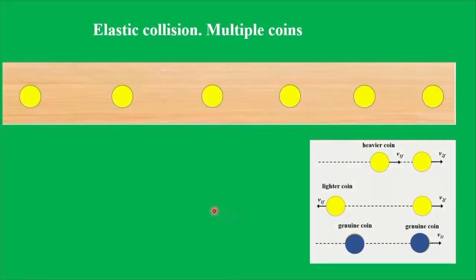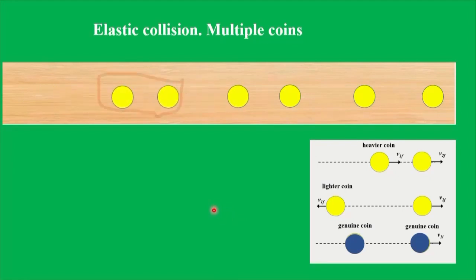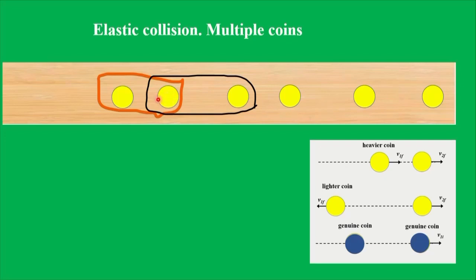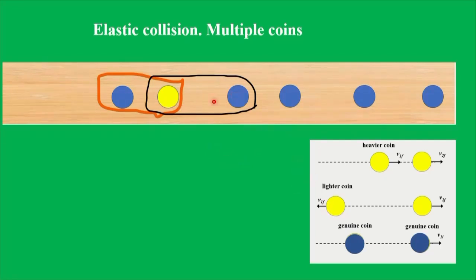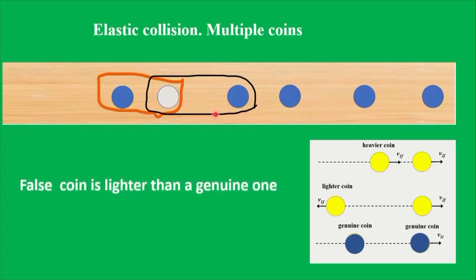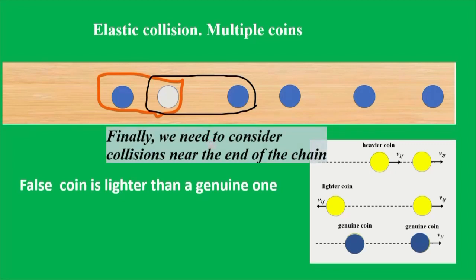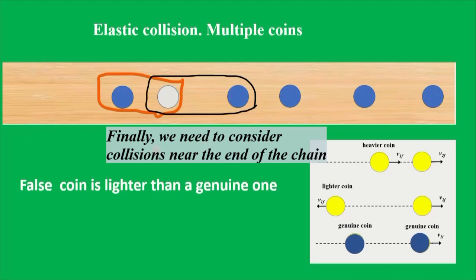The next case is similar to the previous. We saw that these two coins moved in the same direction after the collision, and these two in opposite directions. For this reason, the false coin is this one, and all others are genuine coins. The false coin bounced from the genuine one, and for this reason it is lighter than a genuine one. Finally, we considered the false coin close to the end of the chain of coins, but I believe you can do this analysis yourself.